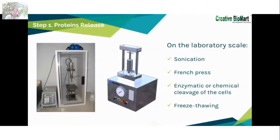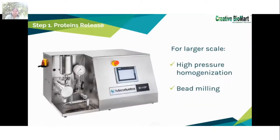First, the protein needs to be released from the cell. There are several methods to disrupt the cell membrane: sonication is a common method; others include French press, enzymatic or chemical cleavage of cells, and freeze-thawing. For larger-scale continuous disruption, high-pressure homogenization or bead milling are widely used.